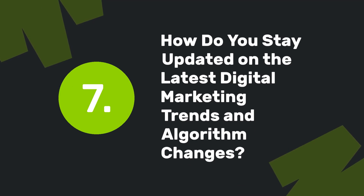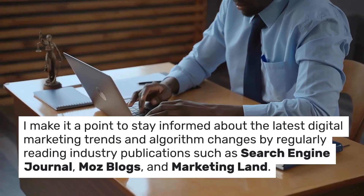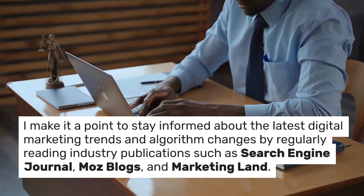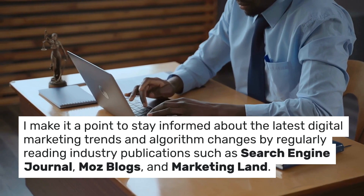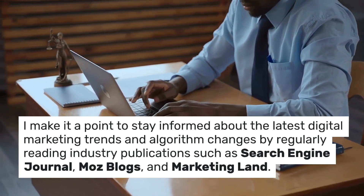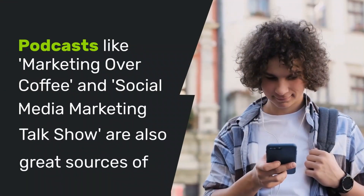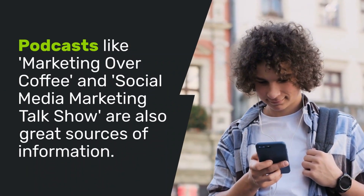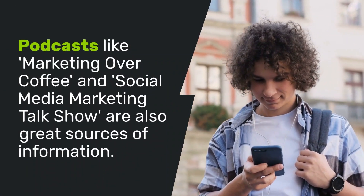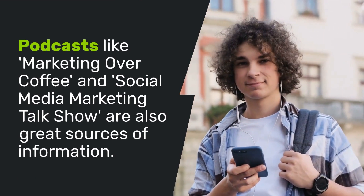How do you stay updated on the latest digital marketing trends and algorithm changes? I make it a point to stay informed by regularly reading industry publications such as Search Engine Journal, Moz Blog, and Marketing Land. Podcasts like Marketing Over Coffee and Social Media Marketing Talk Show are also great sources of information.